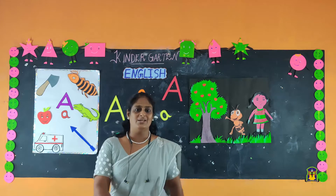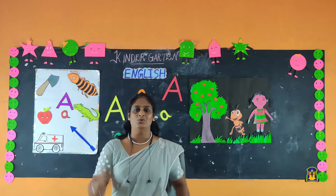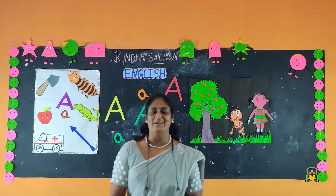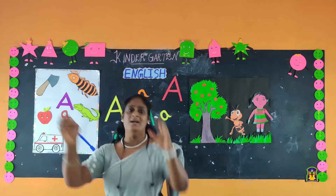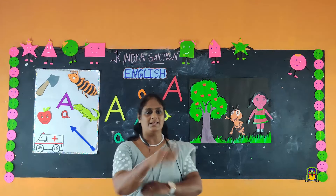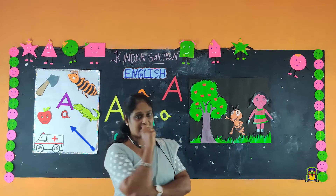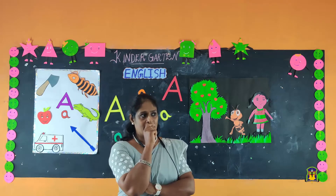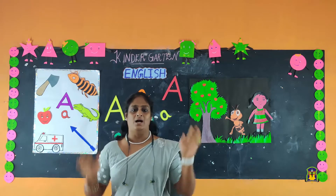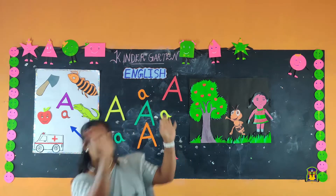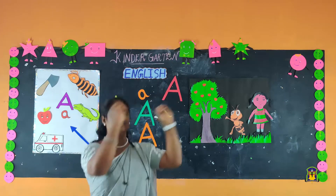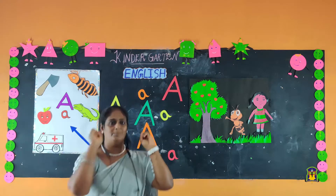The ants go marching one by one, hurrah, hurrah. The ants go marching one by one, hurrah, hurrah. The ants go marching one by one, the little ones stop to have fun. They all go marching down to the ground, to get out of the way. Boom, boom, boom, boom, boom, boom.